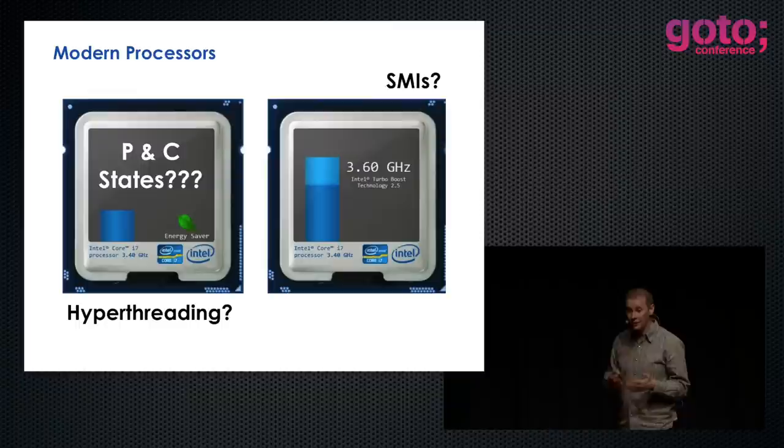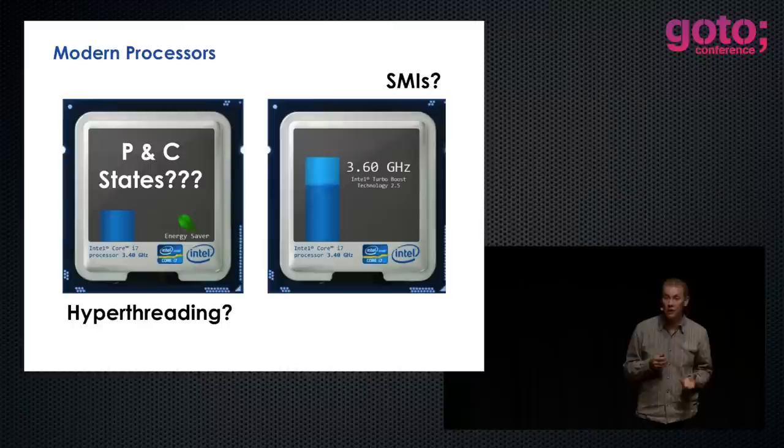Even more interesting are things like SMI — System Management Interrupts — stuff that you can't do anything about at an operating system level, where your CPU will occasionally stop, take its temperature, check for faults, and do all sorts of interesting things to check its state. Looking at the latest CPUs, this is getting even more complex. These sorts of things are happening. As we go up a level to the bigger box, our CPUs and systems have become very complex — they're in fact networks now.